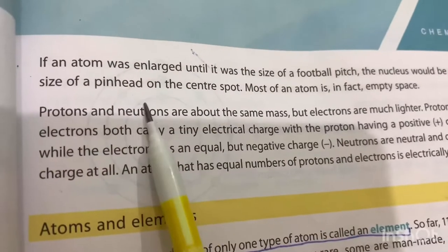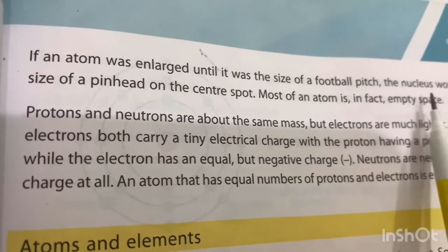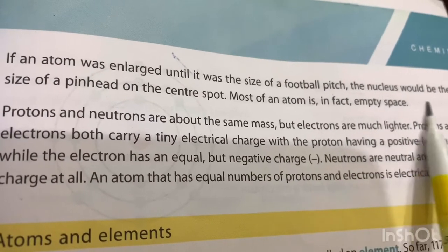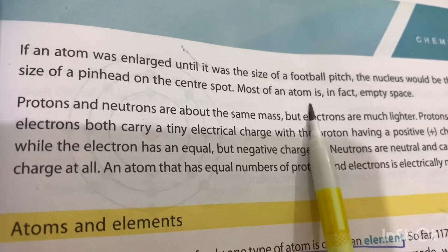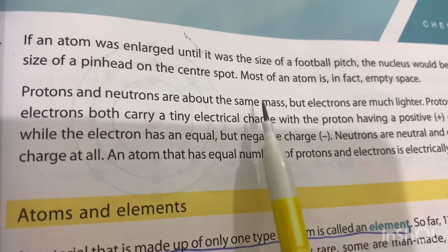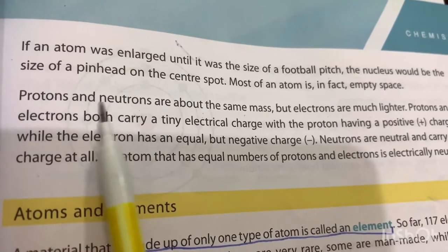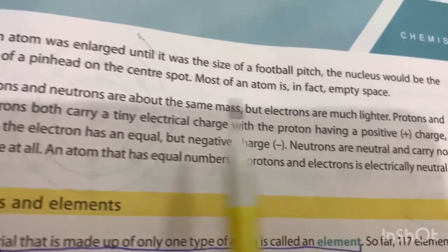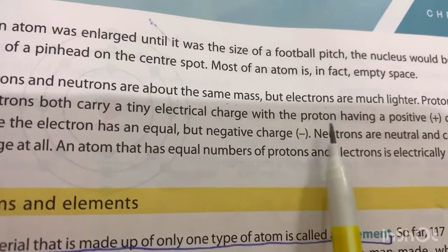In the book they give a nice example: if an atom were enlarged until it was the size of a football pitch, the nucleus would be the size of a pinhead on the center spot. This shows that most of the atom is in fact empty space. Protons and neutrons have about the same mass, but electrons are much lighter.